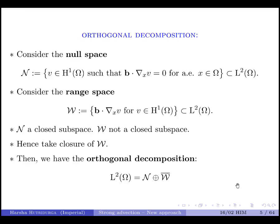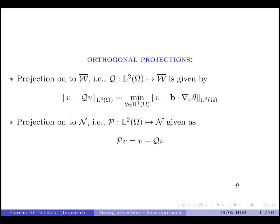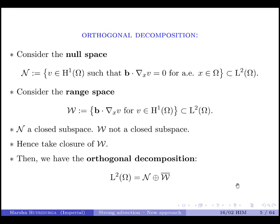Then we define the range space of the same operator B dot grad, which is again a subspace of L2 of omega since B is an L-infinity function. The closure of the range space script W is taken, and we use the Hilbert decomposition theorem to show that L2 of omega can be decomposed into a direct sum of an element in the null space and an element in the closure of the range space. Once you have this orthogonal decomposition, for any element in L2, you can project it onto either the null space or onto the closure.